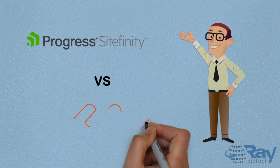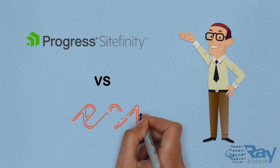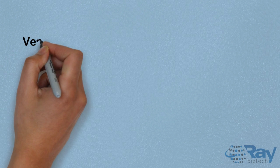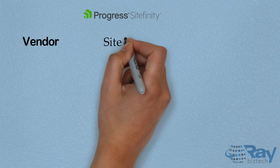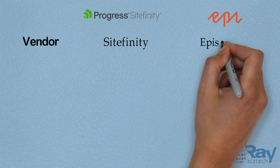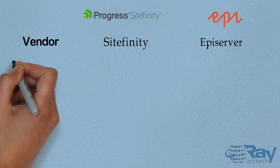Progress Site Affinity versus API Server. The vendor for Progress Site Affinity is Site Affinity, and for API Server, it's API Server.